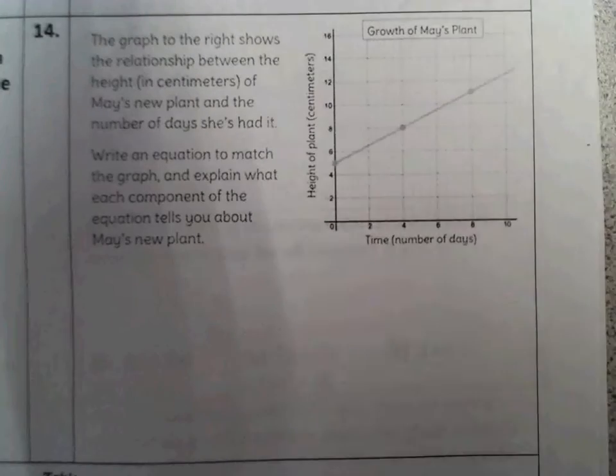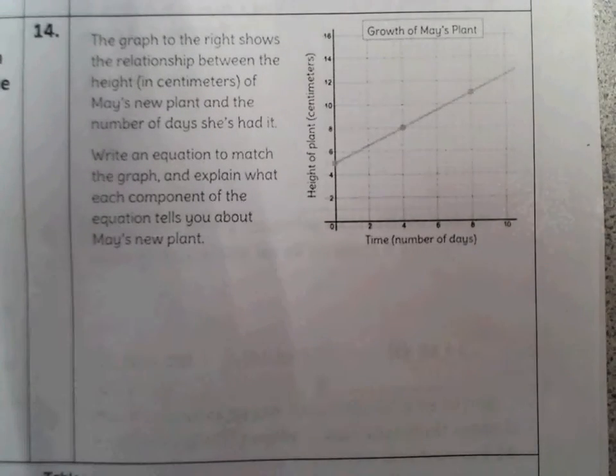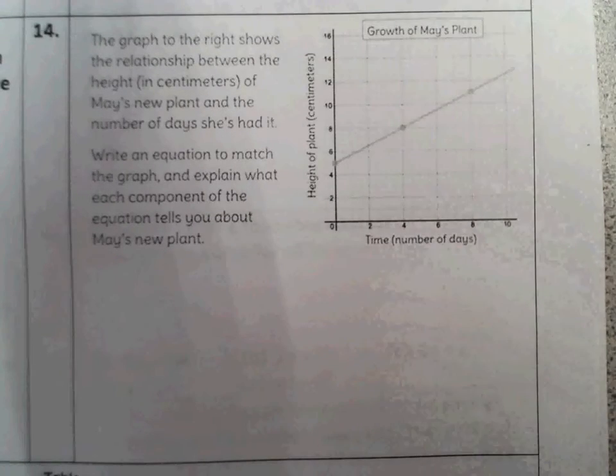The graph to the right shows the relationship between the height in centimeters of May's new plant and the number of days she's had it. Write an equation to match the graph and explain what each component of the equation tells you about May's new plant.